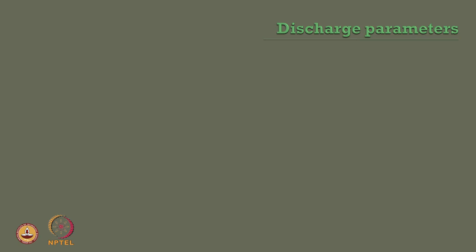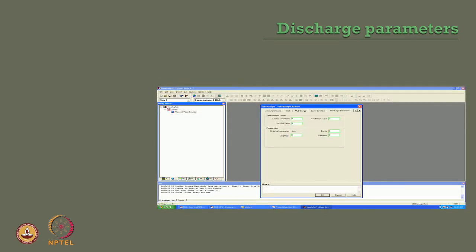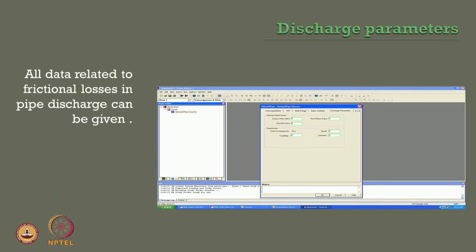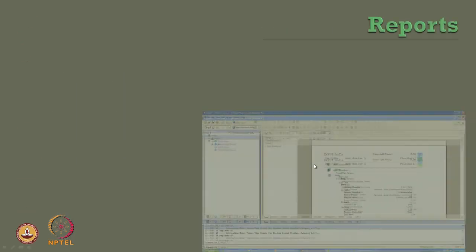Discharge parameters arising from the same menu cover frictional losses in pipe discharge, including velocity head loss, head loss at non-return valve, head loss at shut-off valve, and excess flow valve data. One can also generate a variety of reports from the results of risk analysis. The input data given will appear as a standard data file showing the material specified, the surface scenario type, the physical diameter, and other input parameters. The report has two forms — a general one with input data, and detailed reports depending on the specifics of the input data given.